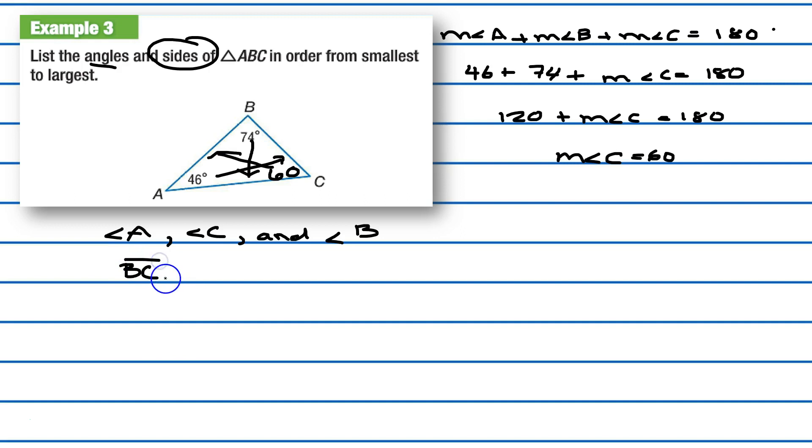Then we have our next one, which would be 46 and 60, so then we have AB, which is the next biggest one. And then we have our biggest side, which is 74 degrees here - opposite of that is AC. And there we go.